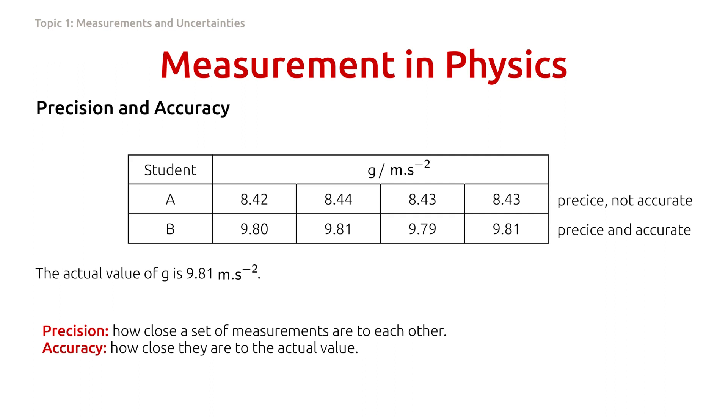Precision is how close a set of measurements are to each other. From the table above, despite being inaccurate, the values of g from student A are reasonably near to one another. Therefore, the measurement is precise.